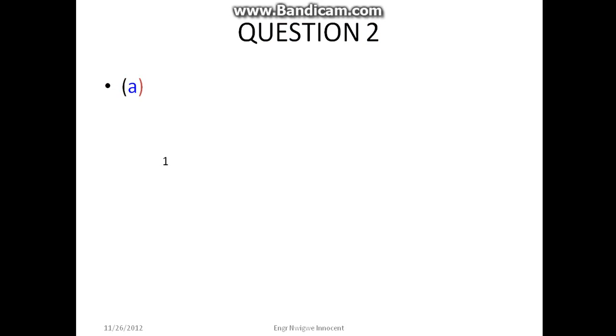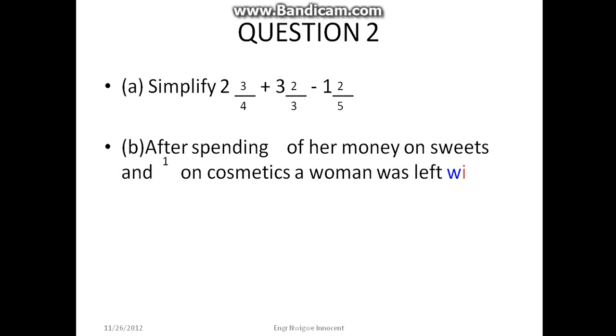Question 2: (a) Simplify 2 3/4 + 3 2/5 - 1 2/3. (b) After spending 2/5 of her money on sweets and 1/6 on cosmetics, a woman was left with 6.50. How much did she have?